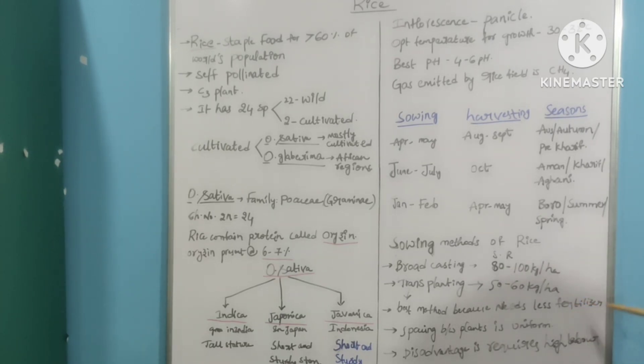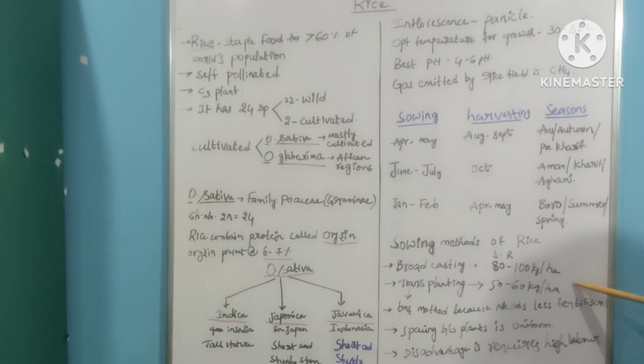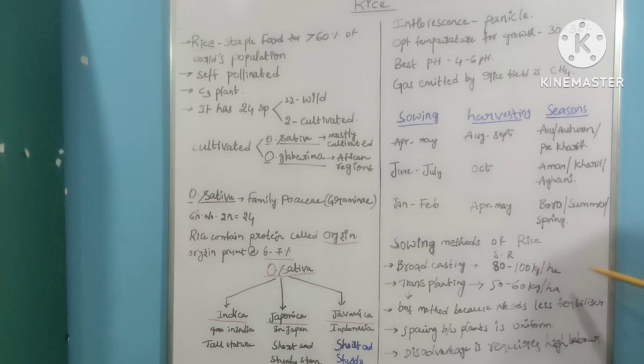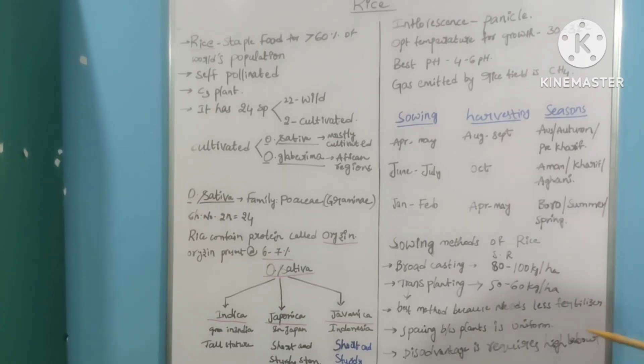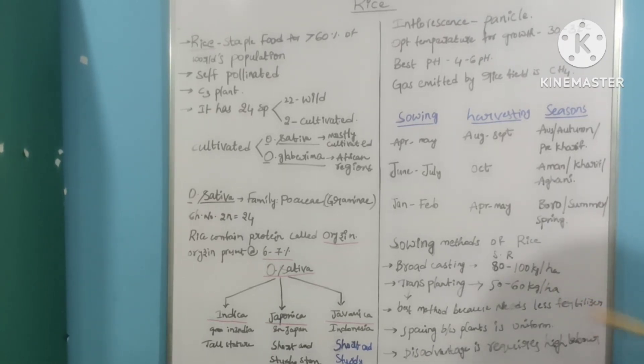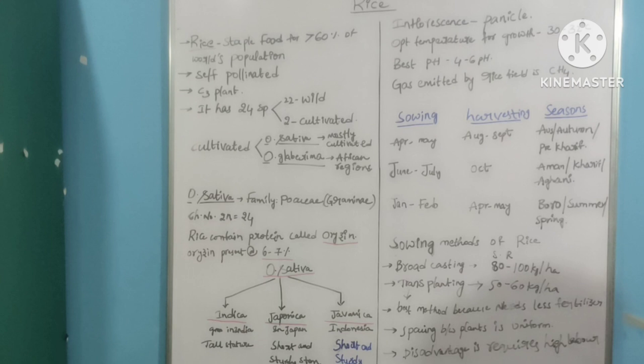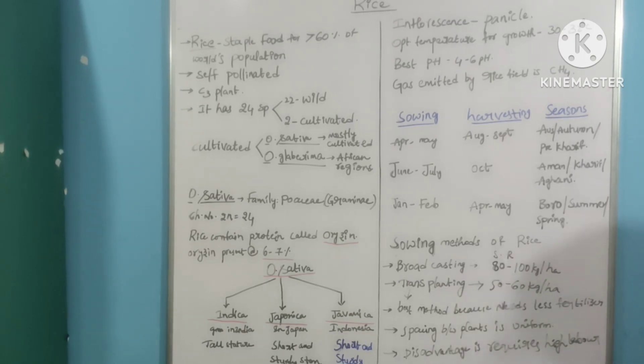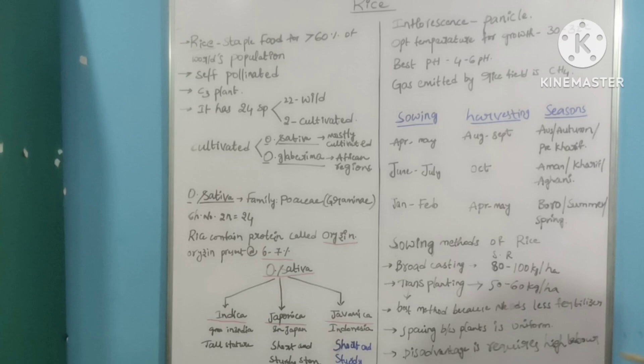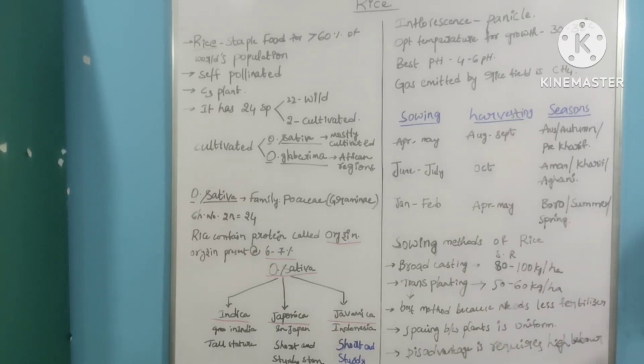For transplanting, we will maintain the spacing, so that will require less amount of seed rate when compared to broadcasting. Transplanting is also a best method to sow the rice crop because it needs less fertilizers and spacing between plants is uniform.